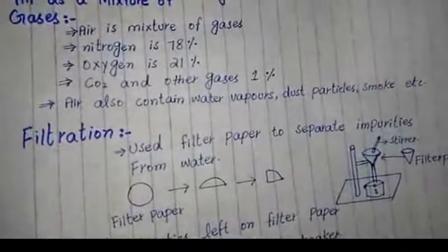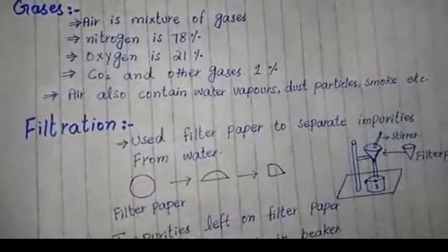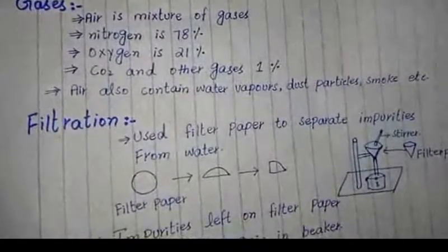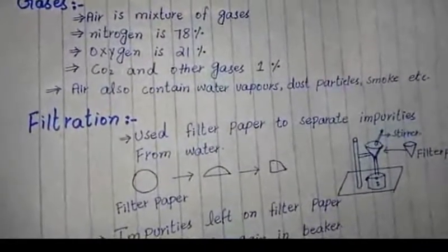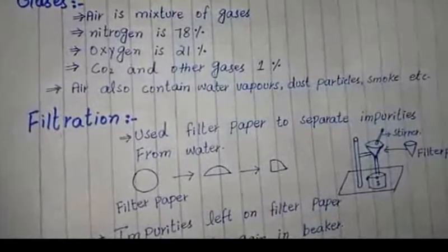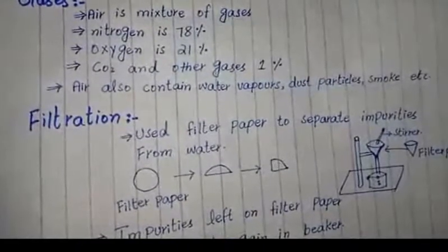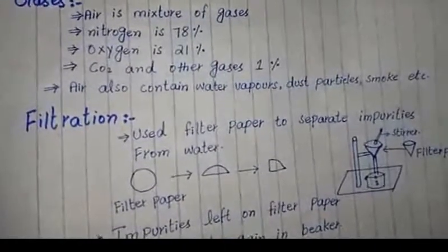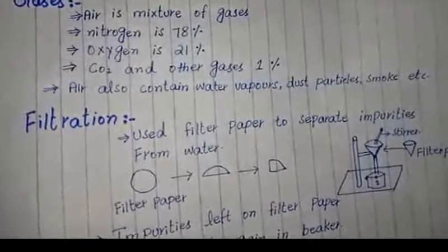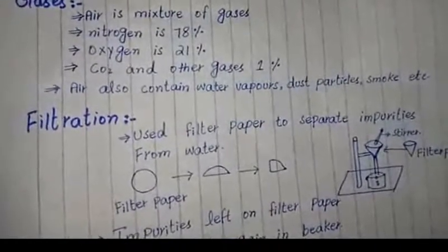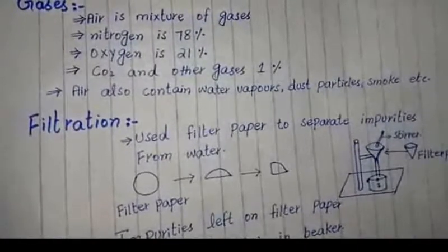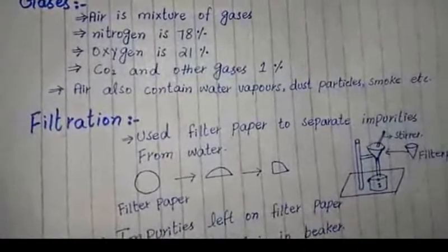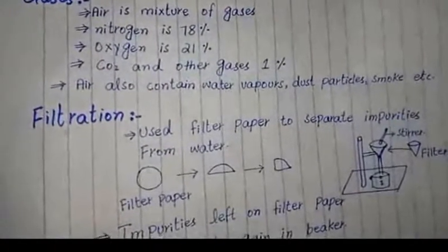We say that air is a mixture of gases. Nitrogen, oxygen, carbon dioxide, helium, and other gases mix in the air and these gases make up specific parts of the air.